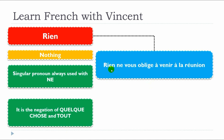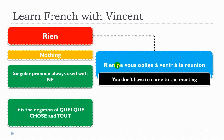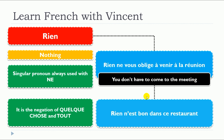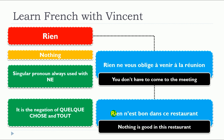It's also possible to start with rien. Rien ne vous oblige à venir à la réunion. So remember, you start with rien, then the second part of the negative form, ne, which is normally reversed. But in that case, you start with rien and then right after you put the ne. Rien n'est bon dans ce restaurant — same concept: you start with rien, then ne after. Of course, you drop the e because your verb starts with a vowel.